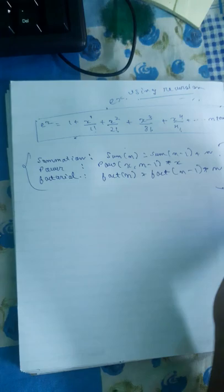For summation, what we wrote in the summation recursion was: sum(n) = sum(n-1) + n. For power, what we wrote was: power(x, n) = power(x, n-1) * x. And for factorial, what we wrote was: fact(n) = fact(n-1) * n. So these are the three functions that we have to perform in this Taylor series.